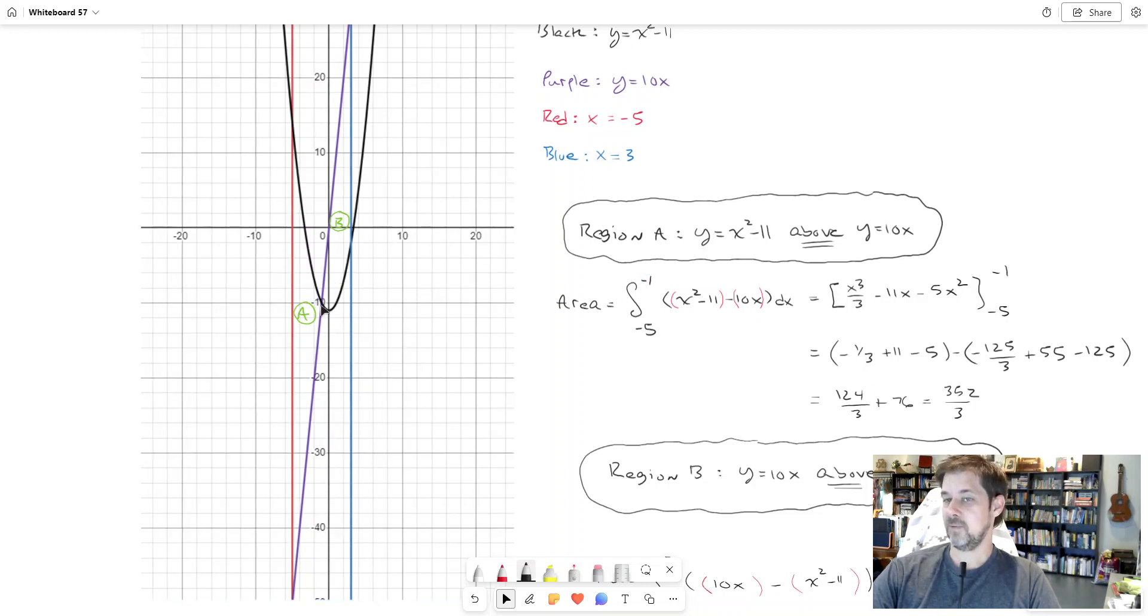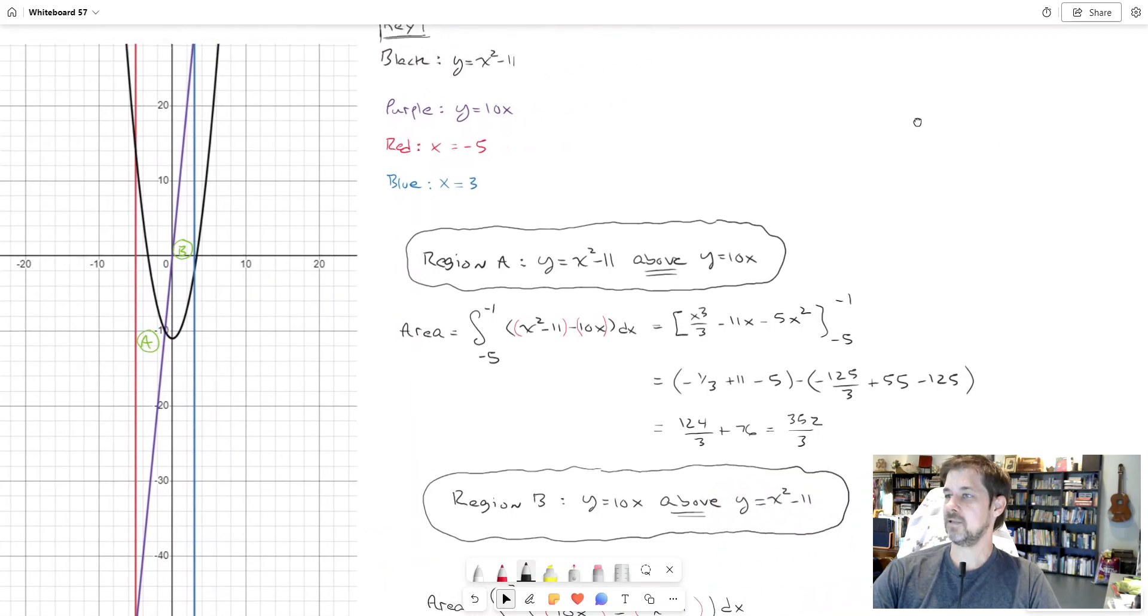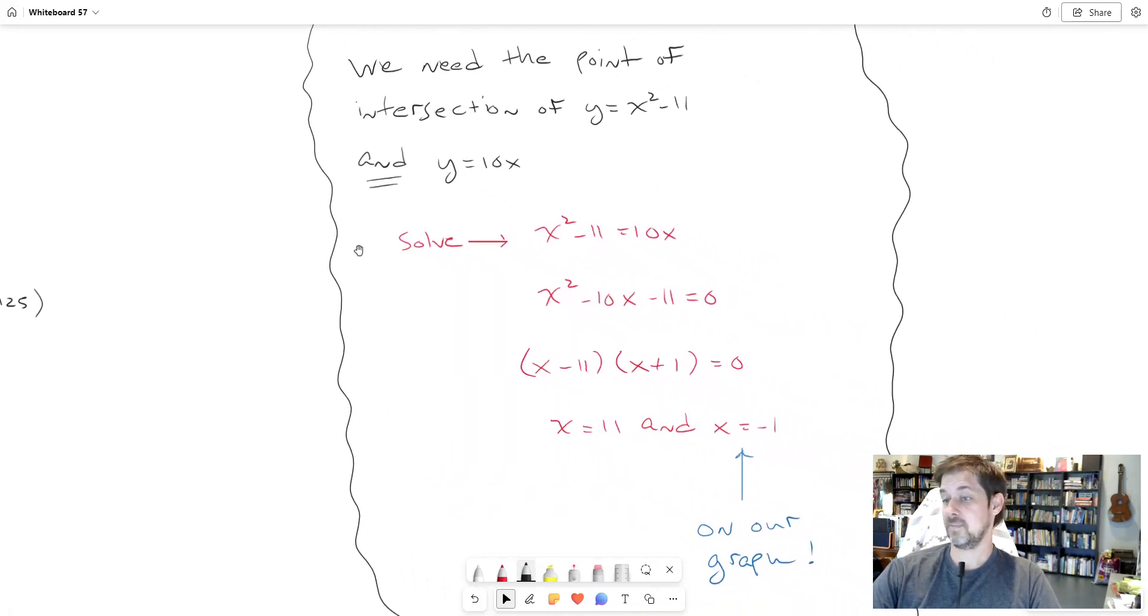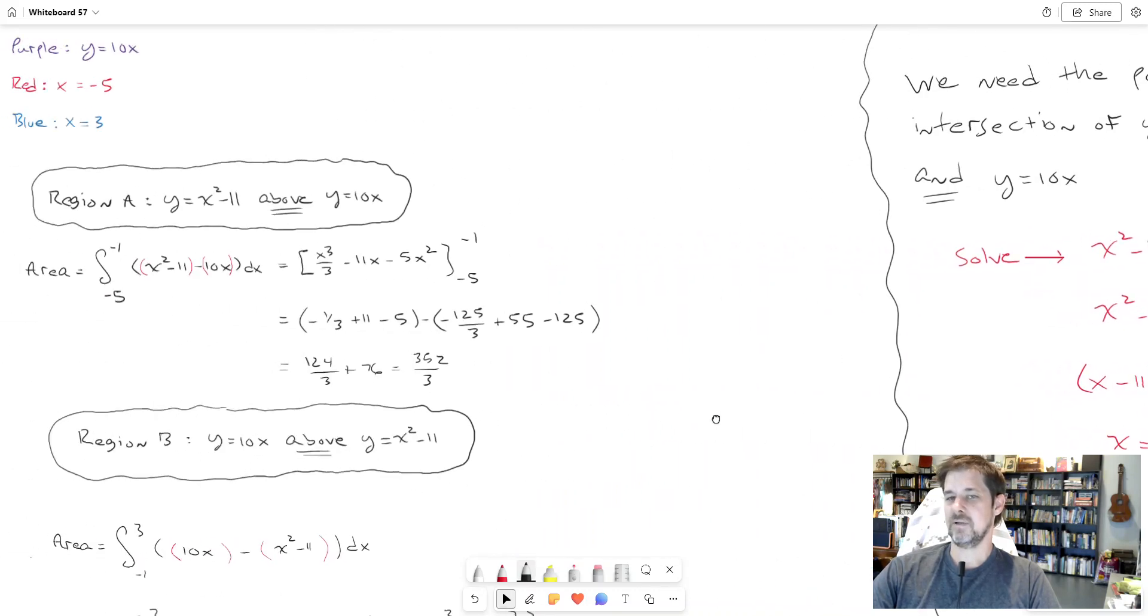Looking at the graph it's a little hard to tell exactly where the purple line and the black parabola intersect. Let's pause for a second - we'll need to know the intersection. That number is part of the setup of our problem. You can find that intersection by just setting the equations of the parabola and the line equal to each other and solving it.